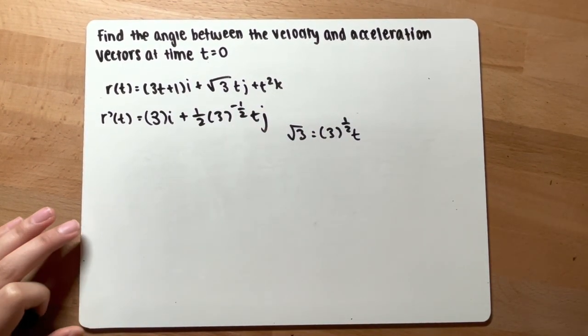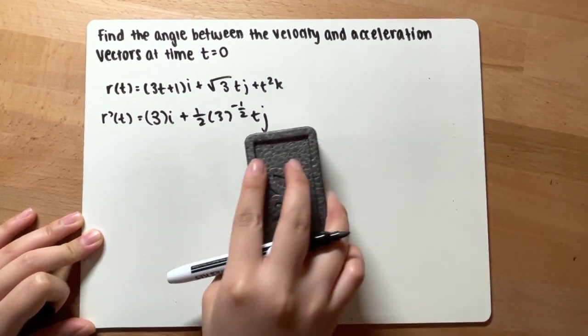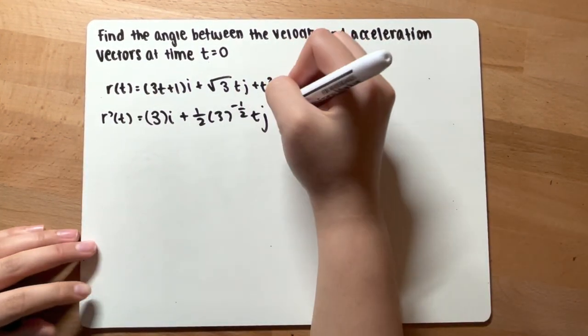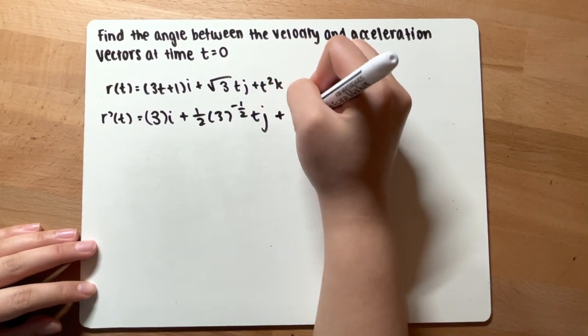Okay, for the j component. Now, for t squared k, the derivative of that is 2tk.